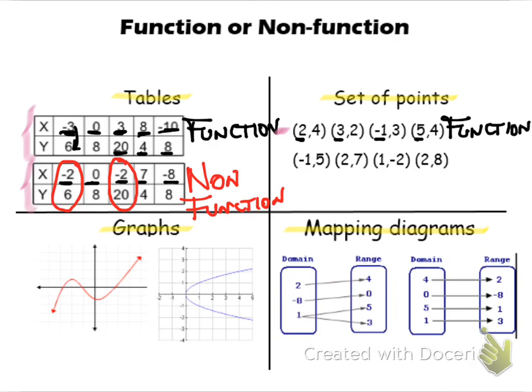Now if I look at my second set of points, I notice that my x values are -1, 2, 1, and 2.